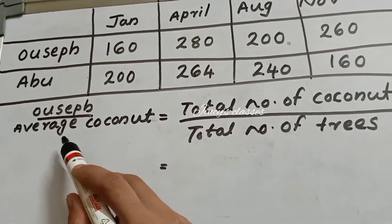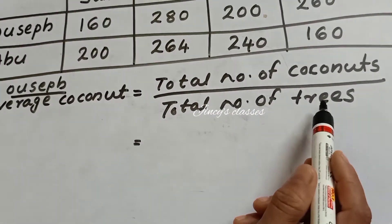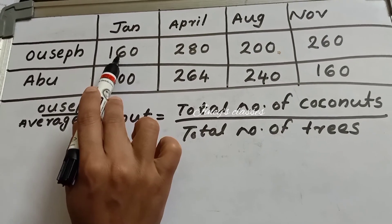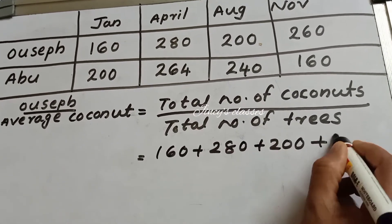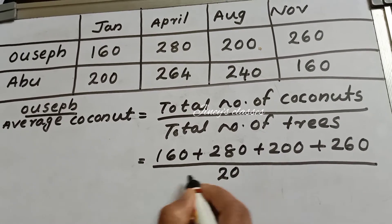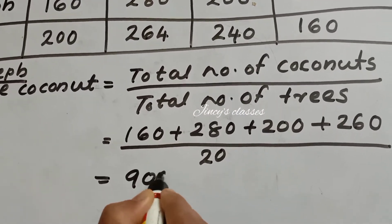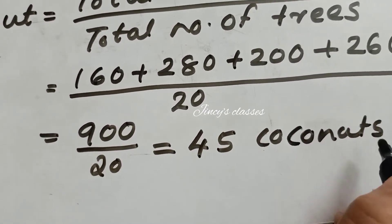Ausi has 20 coconut trees and got 900 coconuts. We know that average equals total sum divided by total number. Ausi's average coconuts = total number of coconuts divided by total number of trees: 160 + 280 + 200 + 260 divided by 20. We get 900 ÷ 20 = 45 coconuts per tree on average.